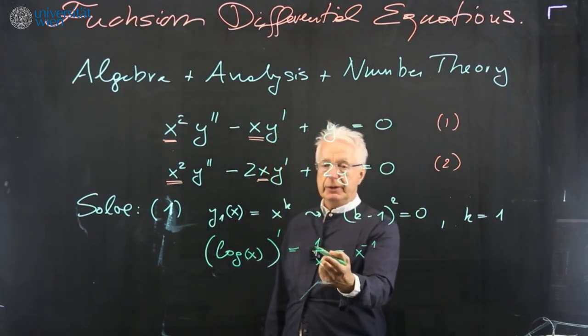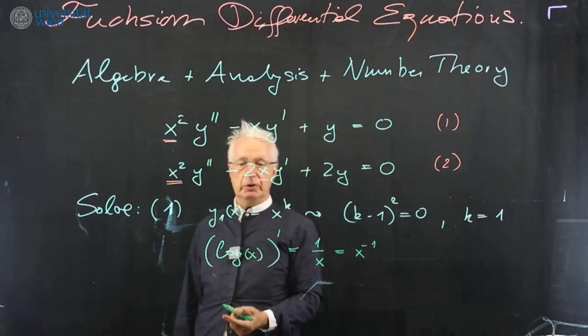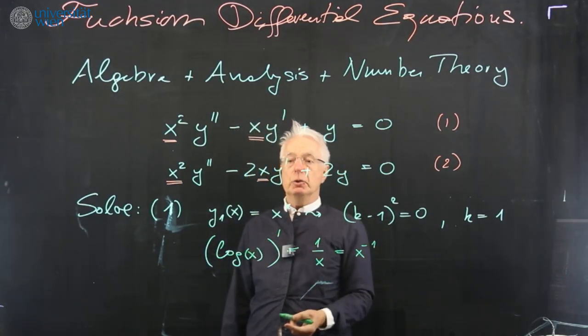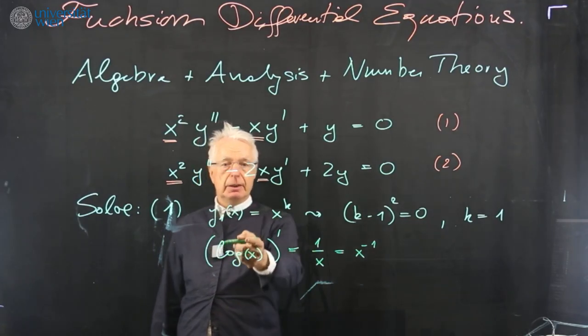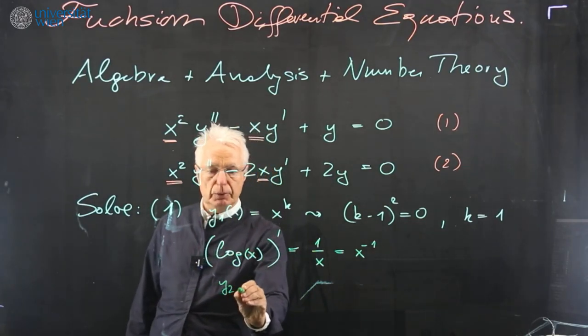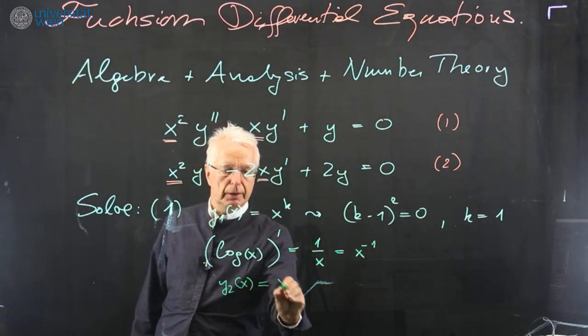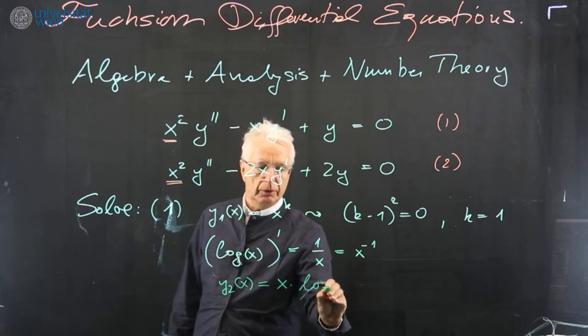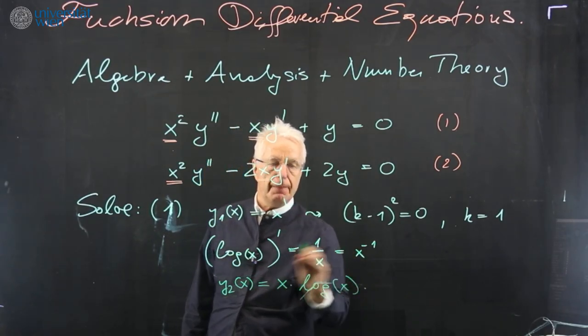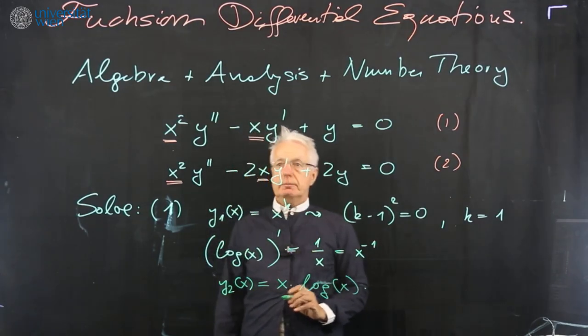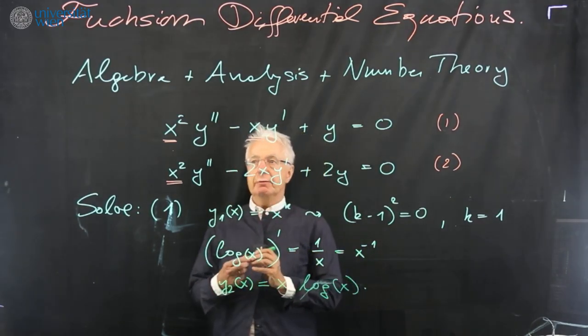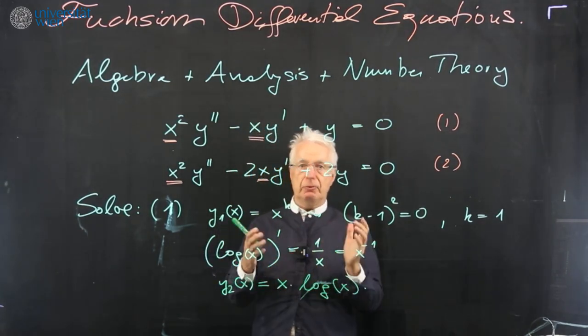So 1 over x has primitive logarithm of x, whereas other monomials have a monomial as their primitive. So here you will see that y2 of x is x times log of x. So this is a very simple situation from the first view.